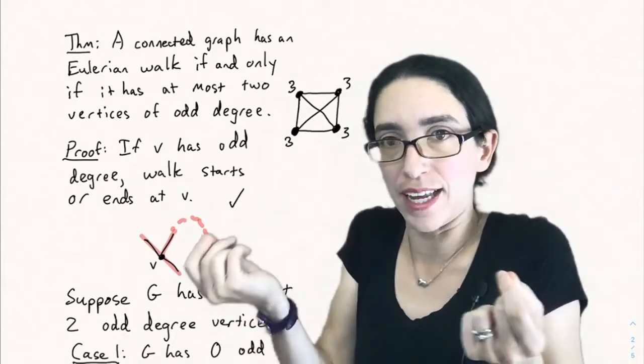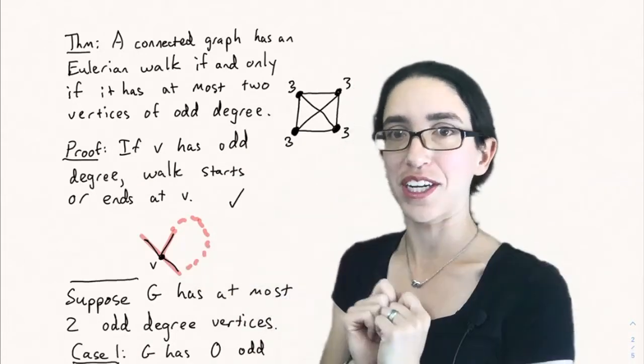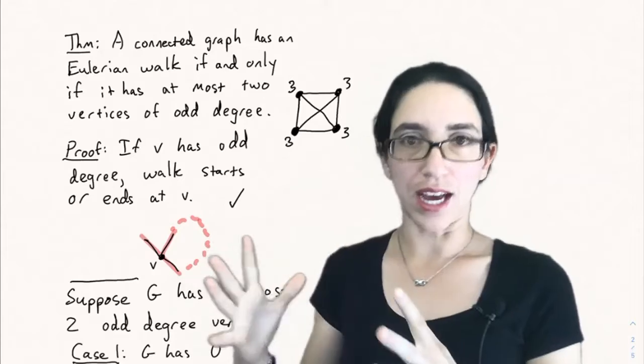What that means is that there can be at most two vertices of odd degree. Because if you only start one place and end one other place, that gives you two places that you could have odd degree. So we know we have to have at most two.